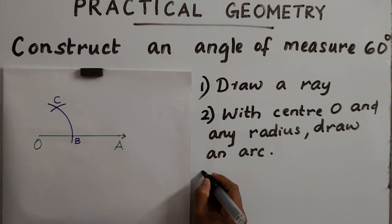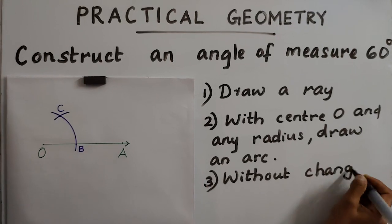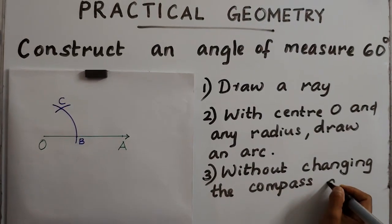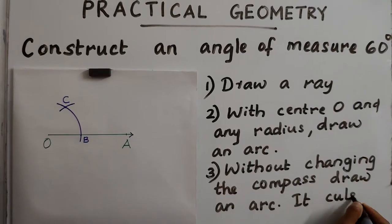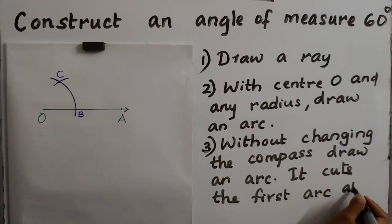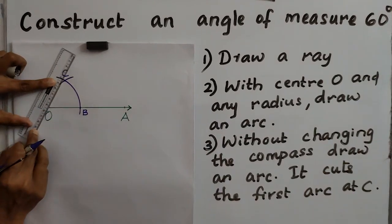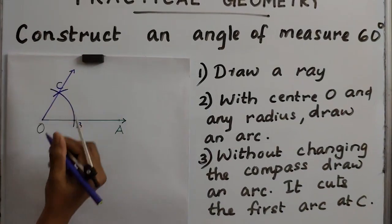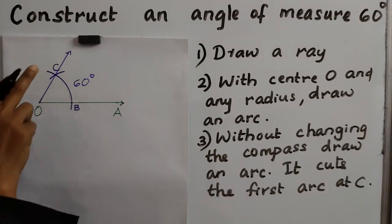Third step is without changing the compass, draw an arc. This measure will be 60 degrees. The last step is to join O and C.